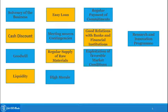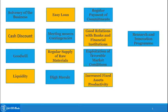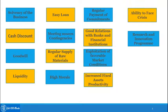Exploitation of favorable market conditions — whenever a market condition is in the business's favor, the business is in a position to exploit it timely and make the best out of it. Increased fixed asset productivity — fixed asset productivity increases because you are able to utilize its potential to the maximum with better working capital management. Research and innovation programs also benefit — when daily operations are going on well, it gives time to the organization to focus on research and innovation as well.